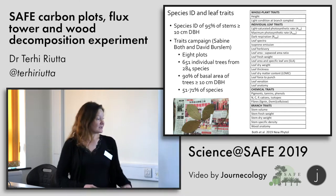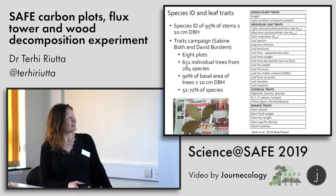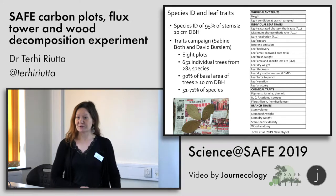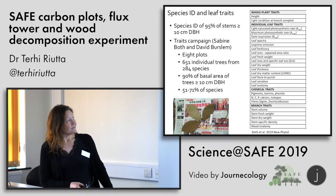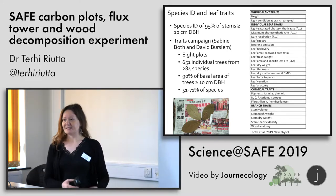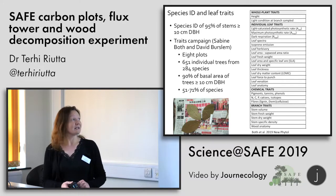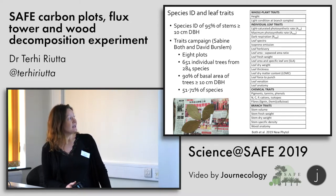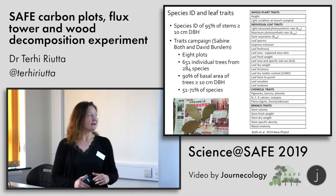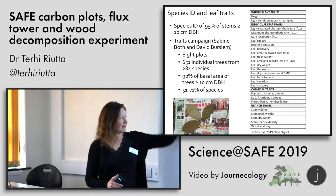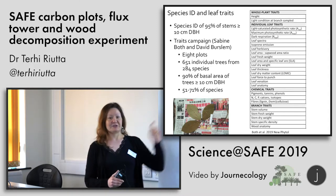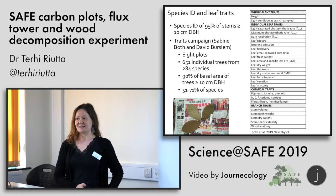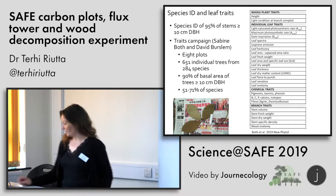We also have quite a lot of information on species composition. After considerable effort, we have now identified about 95 percent of the tree species to species level. There was also a very intensive traits campaign by Sabine Both and David Burslem, who measured a whole suite of leaf traits across the eight plots — almost 300 species — covering 90 percent of the basal area and 50 to 70 percent of the species within each plot.